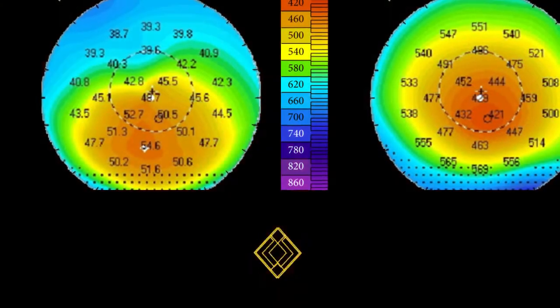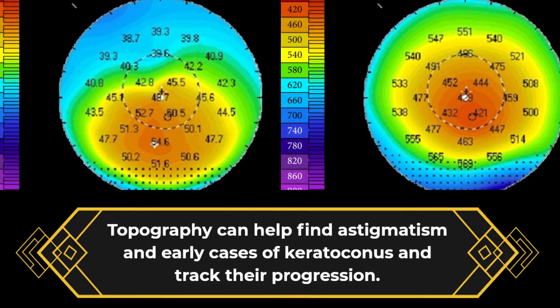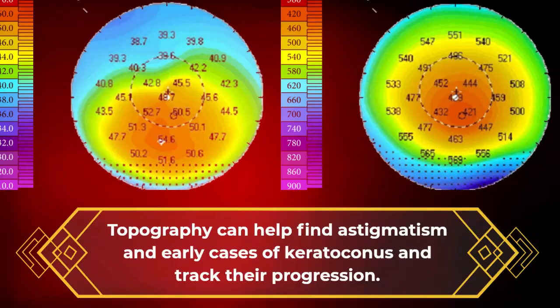Astigmatism and keratoconus. Topography can help find astigmatism and early cases of keratoconus and track their progression.